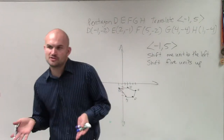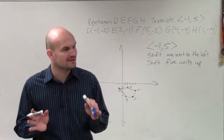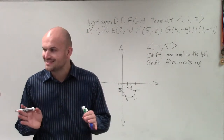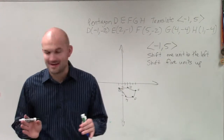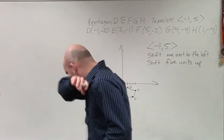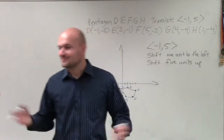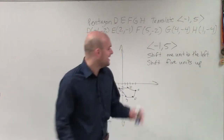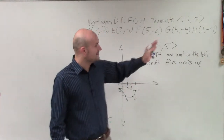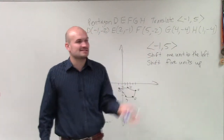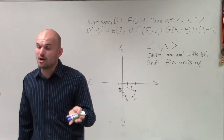So the first term is kind of like your x-coordinate — it's going to tell you to shift left or right. And then the 5 is going to tell you to go positive or negative, if it's either up or down.